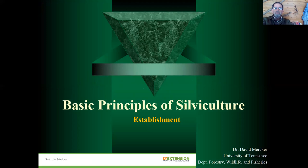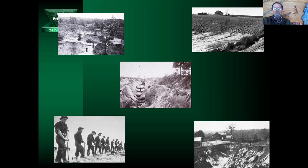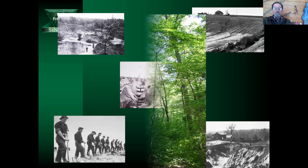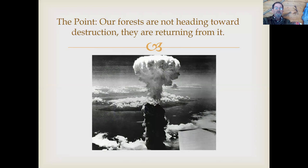If we were to go back in time 100 to maybe 150 years and studied our landscape, many of us would be appalled at how the landscape looked. In the process of developing our nation we had exploited the land — we had cut too many trees, and the soil and the trees alike took a toll. But through silviculture and educated conservation, the land was able to be restored. The point is that our forests are not heading toward destruction — they're actually returning from it.